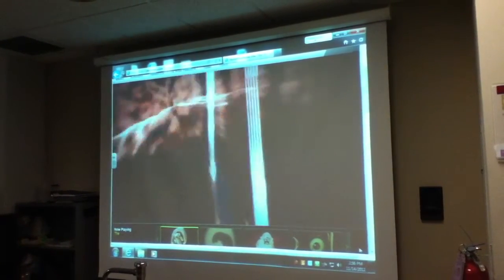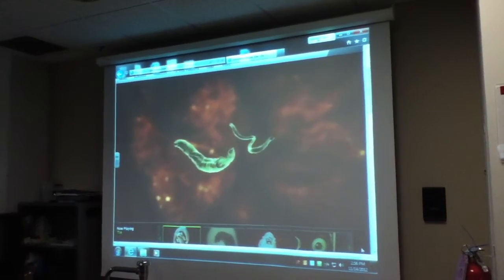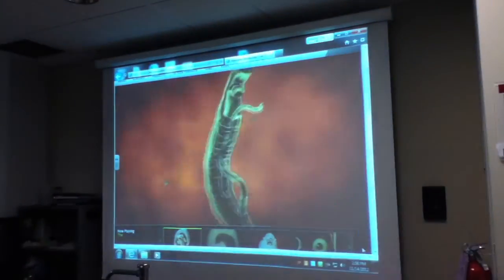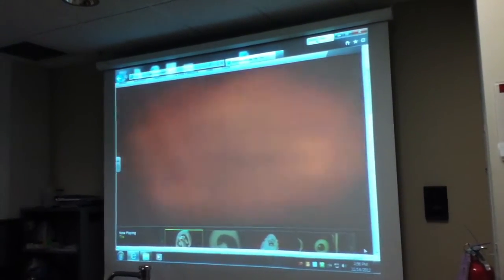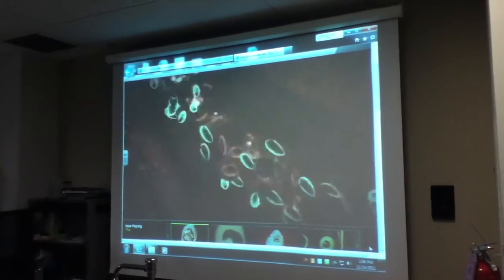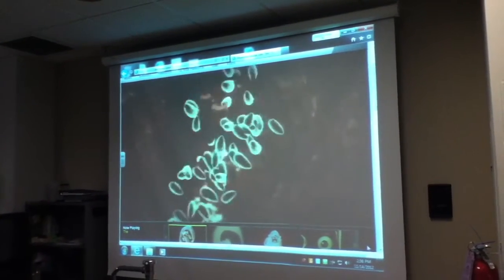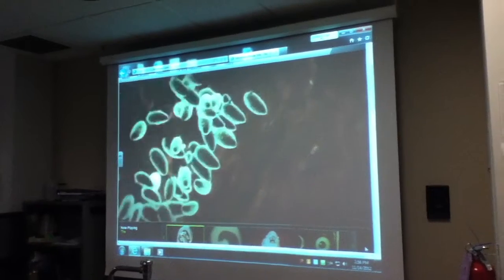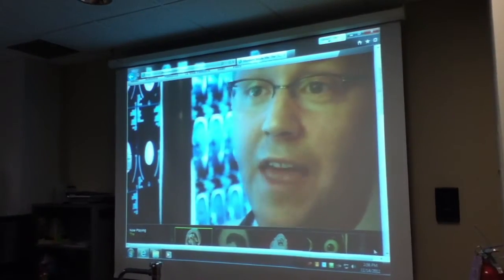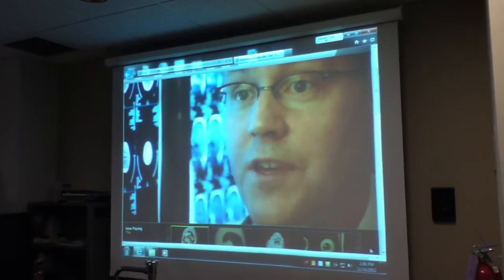The adult worms mature inside the liver, and then they go out of the liver to mate. They lay eggs inside blood vessels around the intestines. Normally, these eggs go into the intestines and are excreted in feces.